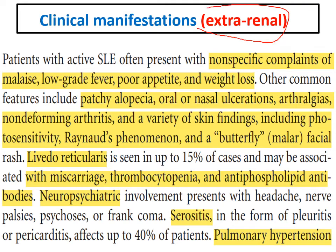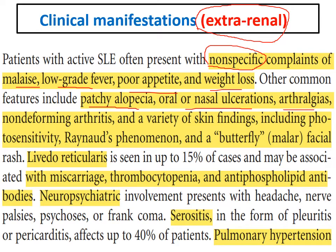Lupus nephritis has extra-renal manifestations since lupus is a multi-systemic autoimmune disease. Non-specific manifestations include malaise, low-grade fever, poor appetite, and weight loss. Skin manifestations include alopecia, oral and nasal ulcerations, erythralgia, arthritis, and photosensitivity.